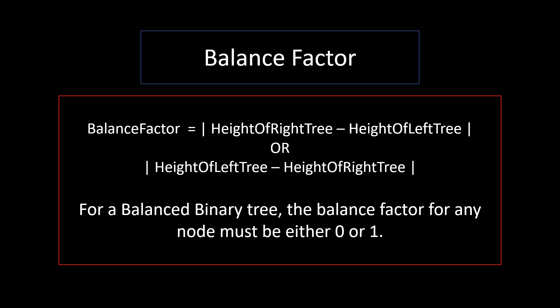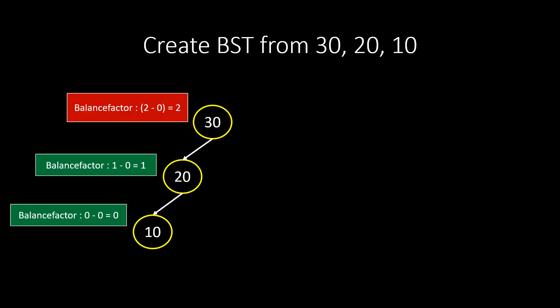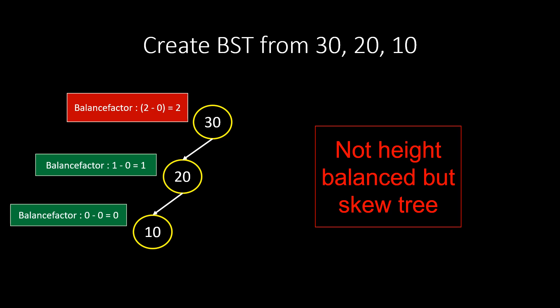In this example, the balance factor for node 10 is 0 as it has no right or left. Balance factor for node 20 is 1 as it has a left node but no right node present. While the balance factor for node 30 is 2 as the height of its left subtree is 2 and that of its right is 0. Because of this, we can say that this tree is not a height balanced binary tree.